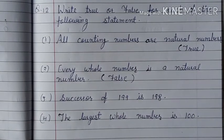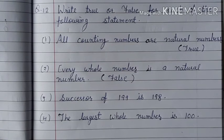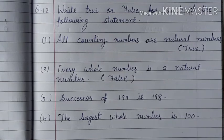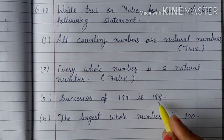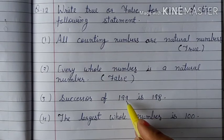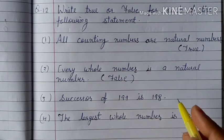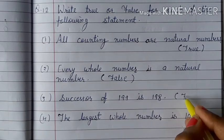Third one is successor of 199 is 199. So it is false. Because for successor we add plus 1. So when we add 199 and 1, we get 200. And 198 is predecessor of 199. So it is false.